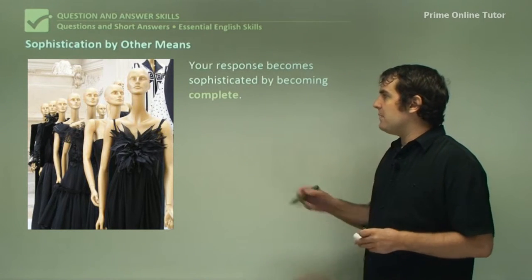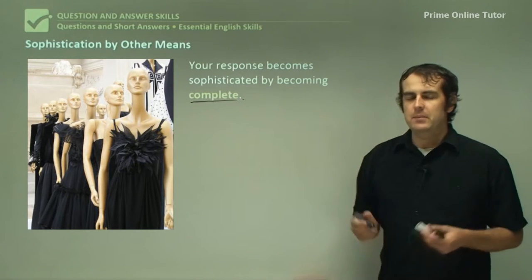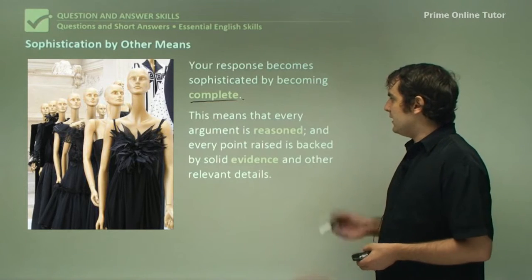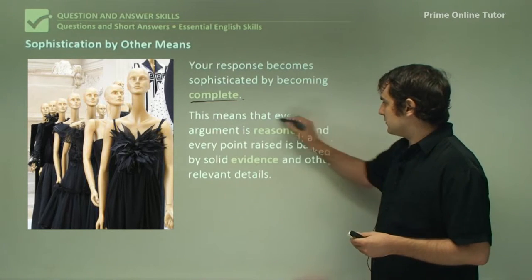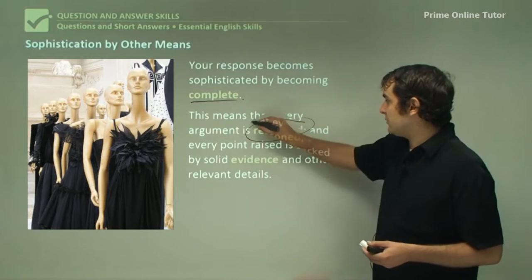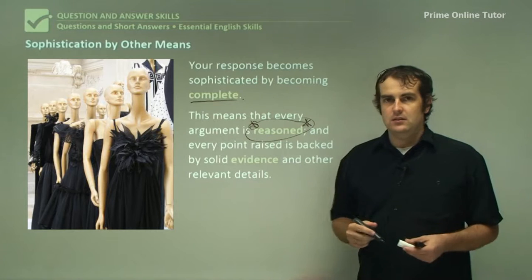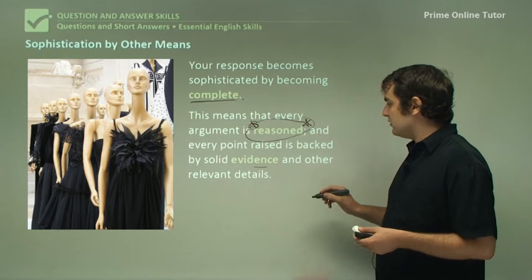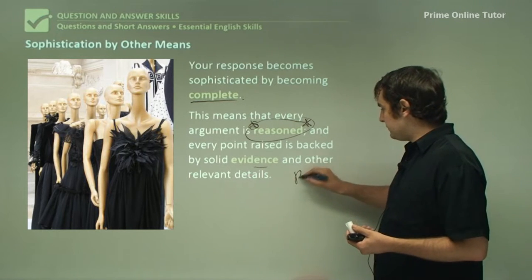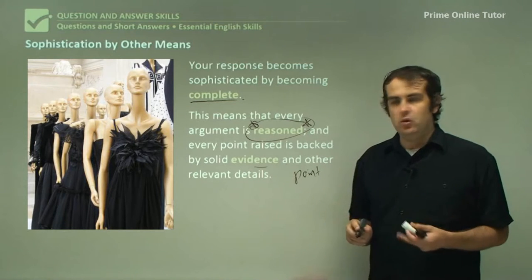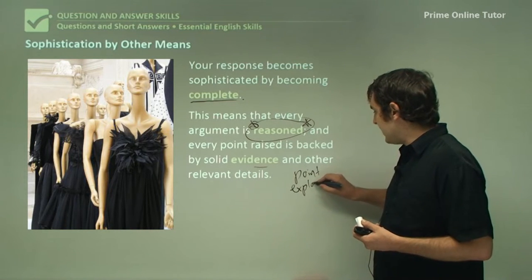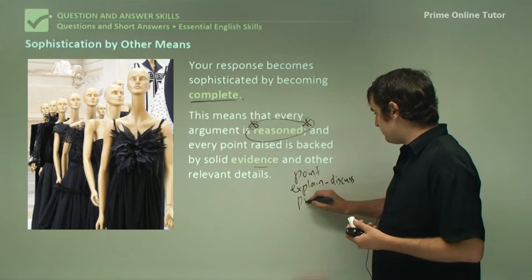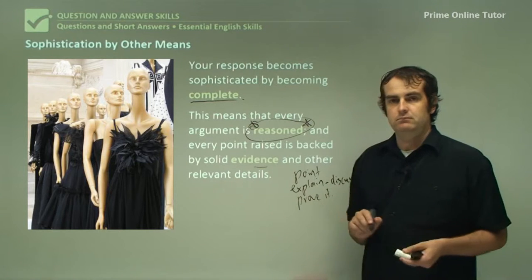Now, this is my better definition. An answer becomes sophisticated by being complete. And it means a number of things. First of all, that every argument is reasoned. I'm going to highlight that word, put it in big shiny stars. It is reasoned. As in, every point that is raised is backed by evidence. So you basically do this. You have a point. For every point, you explain it or discuss how it actually answers the question. You prove it. Done. That's sophistication.